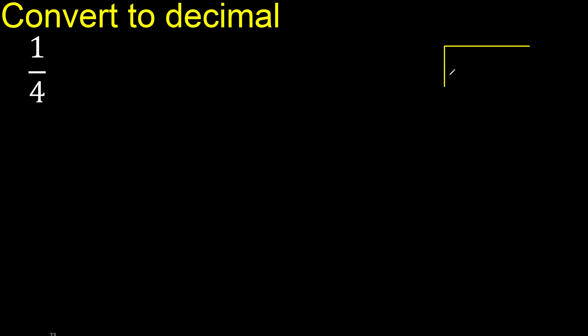1 divided by 4. 1 is less than 4, therefore complete with 0 and 0 point. Point only once.